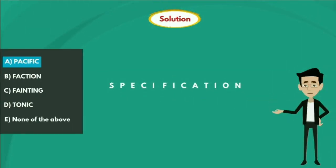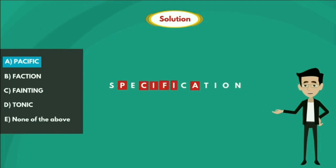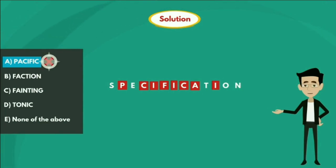Option A - PACIFIC. If we observe the given option, all the letters P-A-C-I-F-I-C are present in the given word SPECIFICATION. So option A is false.